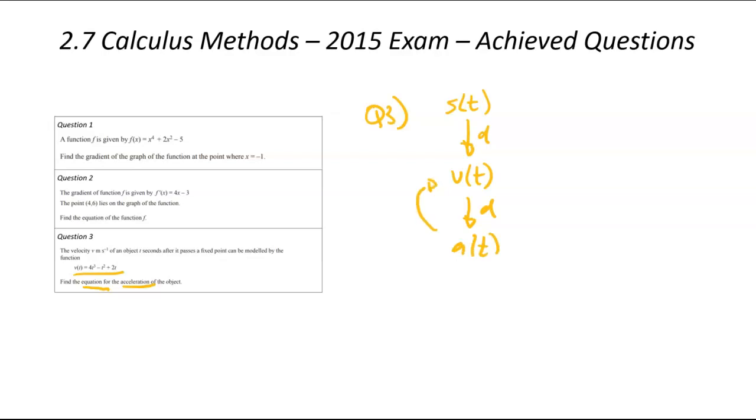Just a reminder, if you're going in the other direction, you're integrating. But this time around, we're going down the chain. We've been given the velocity and we've been asked to find the acceleration, which means we need to differentiate this equation. Let's write down our original function. The velocity in terms of time equals 4t³ - t² + 2t.